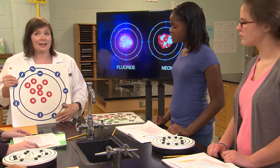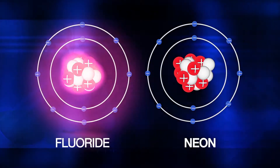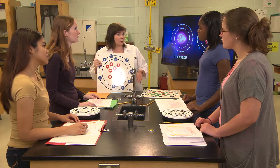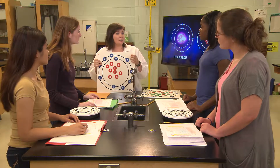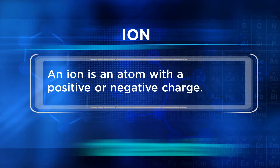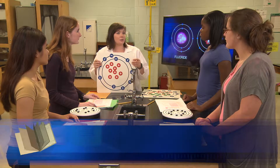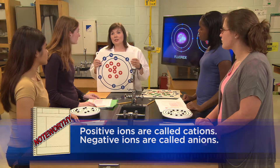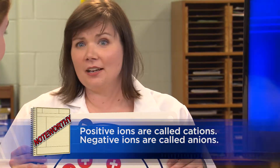This Bohr model of fluorine with an added electron would now have a negative charge and would be called an anion. Atoms are generally neutral, but sometimes an atom can gain an electron and become a negative ion. Some atoms can lose an electron and become a positive ion. An ion is an atom with a positive or negative charge. Positive ions are called cations — you can remember they're positive because the T in cat looks like a plus sign. The negative charge ions are called anions. Ions have different properties than their neutral atom, like how easily they react with other chemicals or how easily they dissolve.